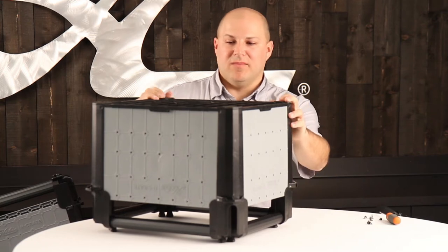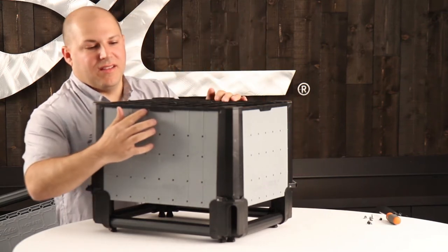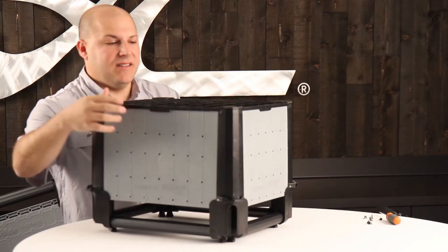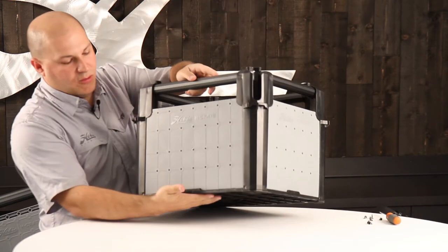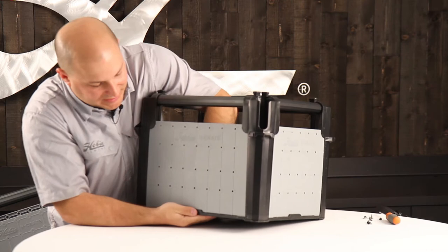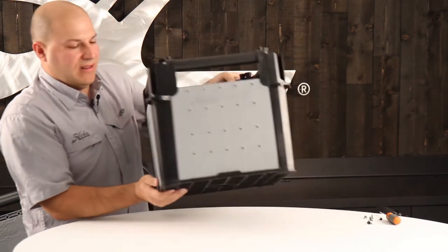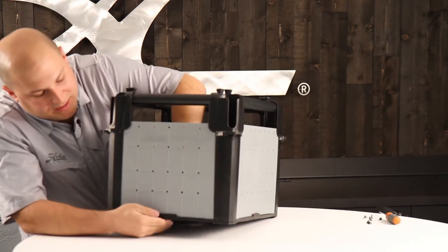Once you've installed the bottom, you want to make sure the reinforcement tabs are clicked in. You'll flip the crate over, support it with your hand, and push from the inside to click in the support tab in the center of each part.